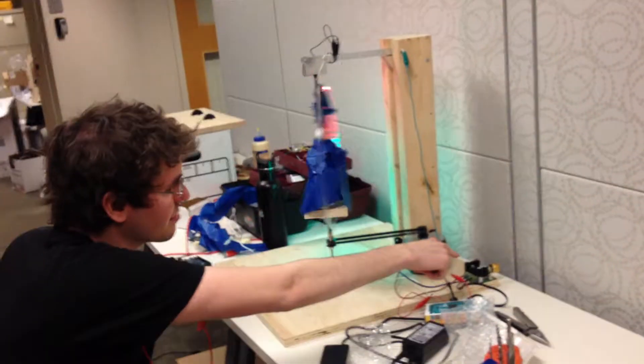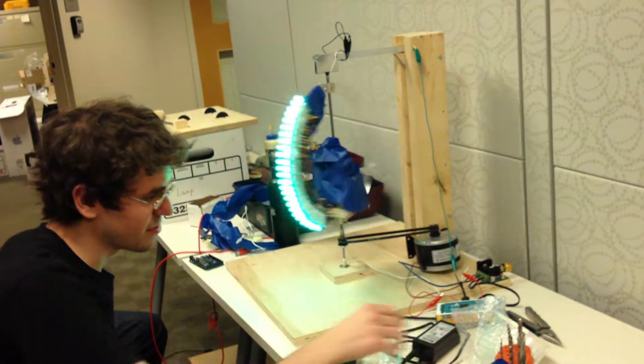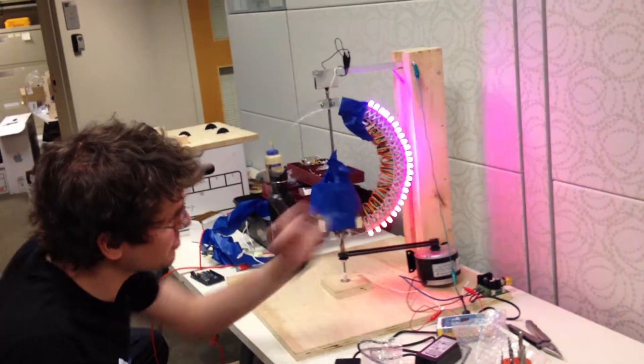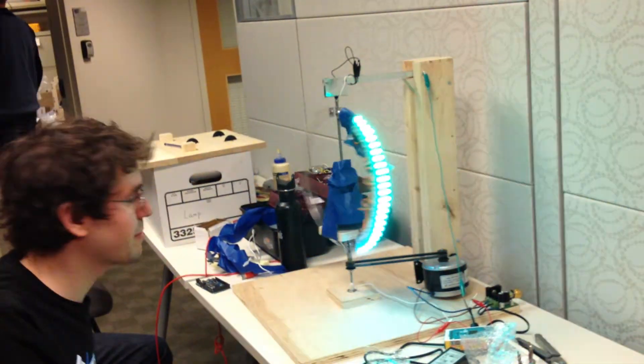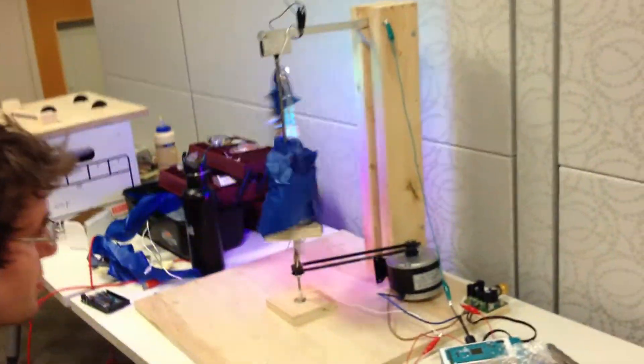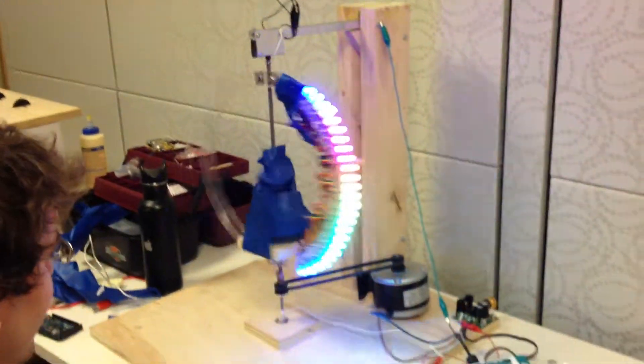This is a Persistence of Vision Globe. We have a motor controller which is taking in 12 volts from its power supply, and using the potentiometer backend, we can actually control the PWM signal it sends out to control the speed of the motor. You'll see that in just a minute as we step it up. We have the motor using a sprocket and a belt to drive the ring.